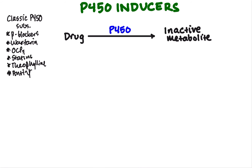What we're talking about here is something called the P450 system. It's a set of enzymes in the liver, and they are primarily responsible for getting rid of drugs — technically, they metabolize drugs. They may take a prodrug and turn it into an active metabolite, but usually what they do is take an active drug and turn it into an inactive metabolite. This is part of the phase one metabolism of drugs, and it happens in the liver.